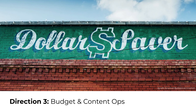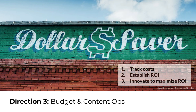The third direction for content strategy based on maturity level is budgeting. This characteristic focuses on the level at which an organization grants budgeting responsibility to a centralized content ops unit. For organizations with lower maturity levels, strategy should focus first on tracking costs so that the value or return on investment of content ops can be established. For organizations with higher maturity levels, strategy might involve innovating with processes, techniques, and technologies that can maximize the ROI of content operations.